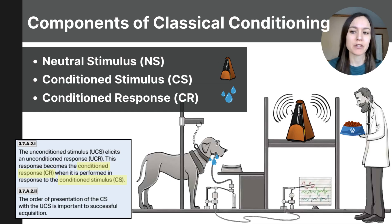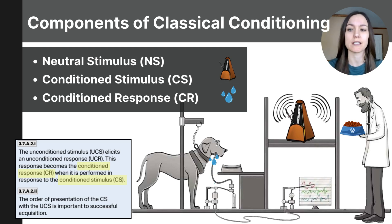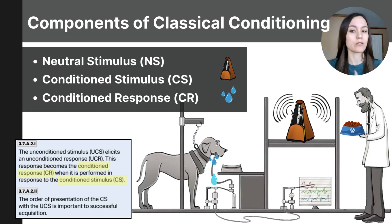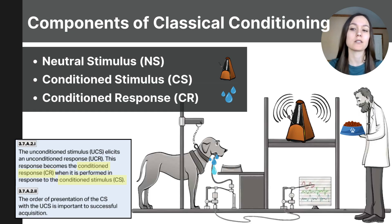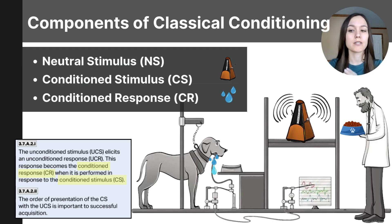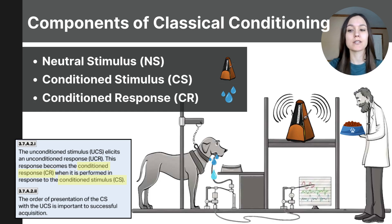Note that the order of presentation of the CS and UCS is important to successful acquisition. For successful conditioning, the CS — the metronome — and the UCS — the food — need to happen very close together. Ideally, the conditioned stimulus should come a few seconds before the UCS, usually within one to five seconds. This short gap allows the subject to link the metronome with the food, so that the CS signals that the UCS is coming soon.